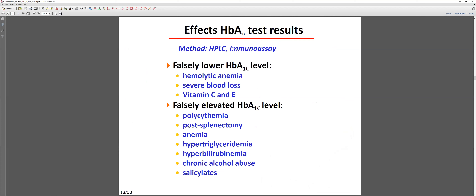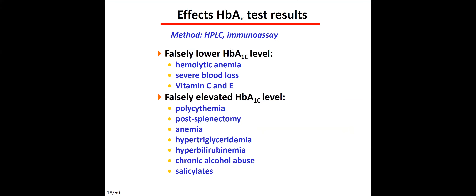HbA1c is measured by HPLC or immunoassay. Falsely lower HbA1c can occur in hemolytic anemia or severe blood loss due to altered hemoglobin turnover. Falsely elevated HbA1c occurs in polycythemia or post-splenectomy. Additionally, hypertriglyceridemia, hyperbilirubinemia, chronic alcohol abuse, and salicylates can all slightly elevate the HbA1c level.